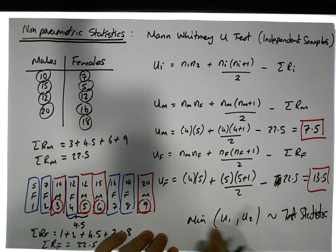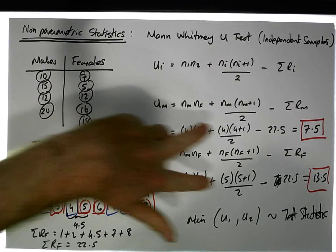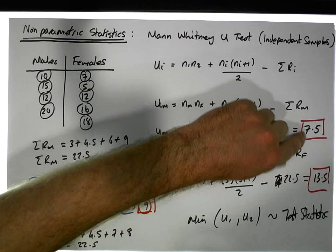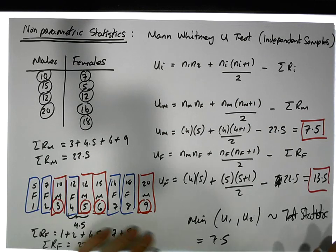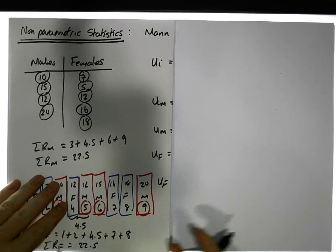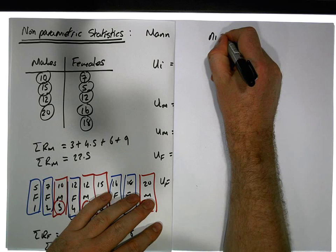So we've got two possibilities: we've got 7.5 and 12.5. I can see that the smallest one, the minimum in this case, is equal to 7.5, and now we're ready to do our test itself.